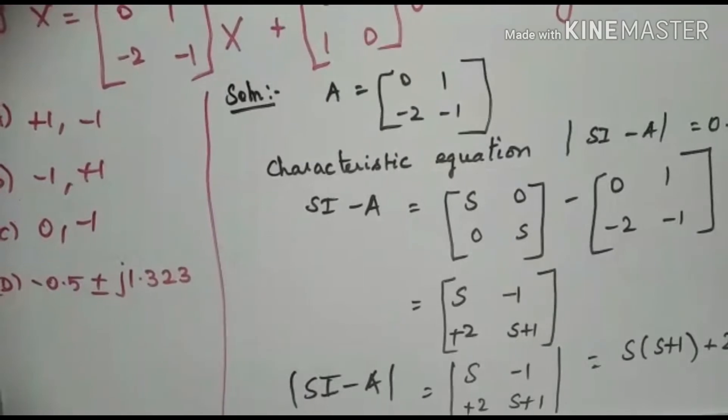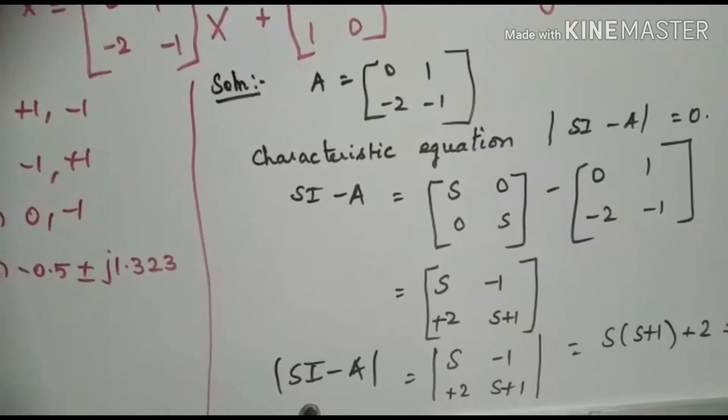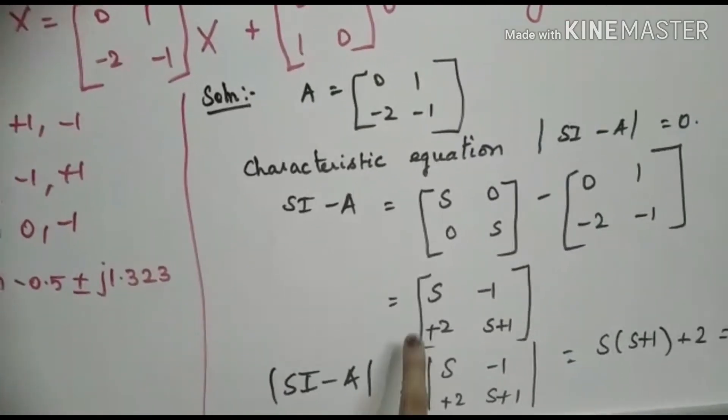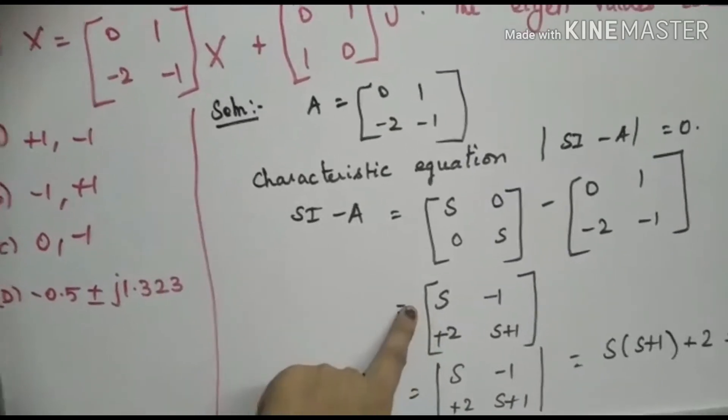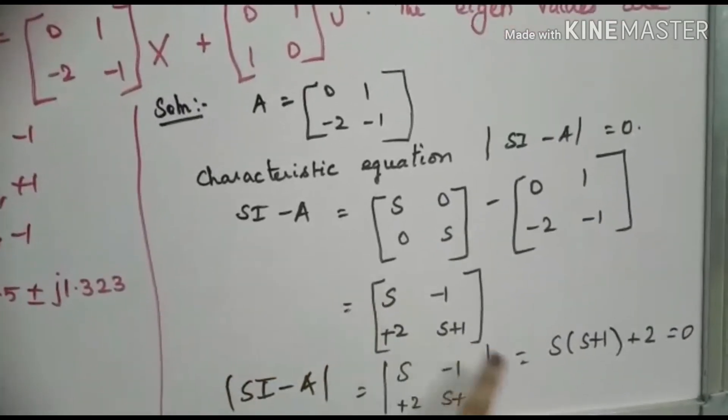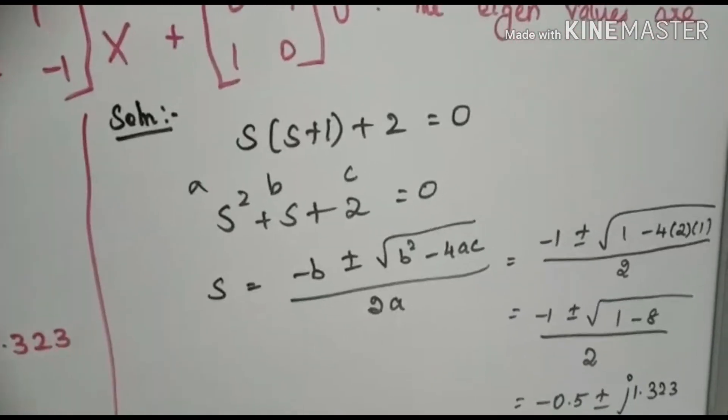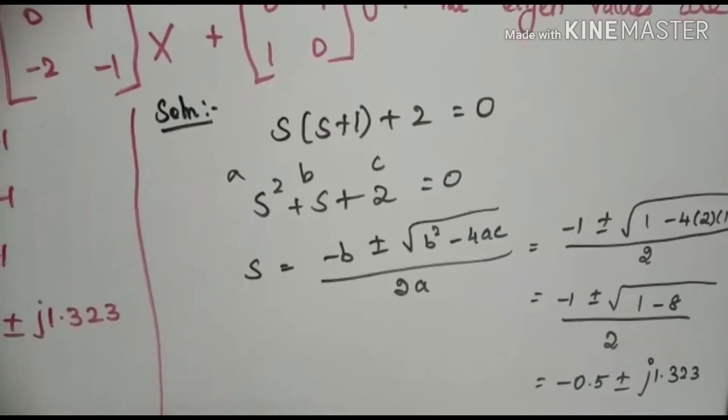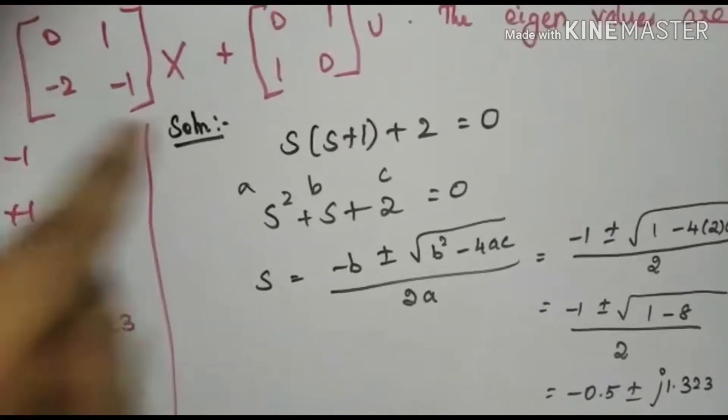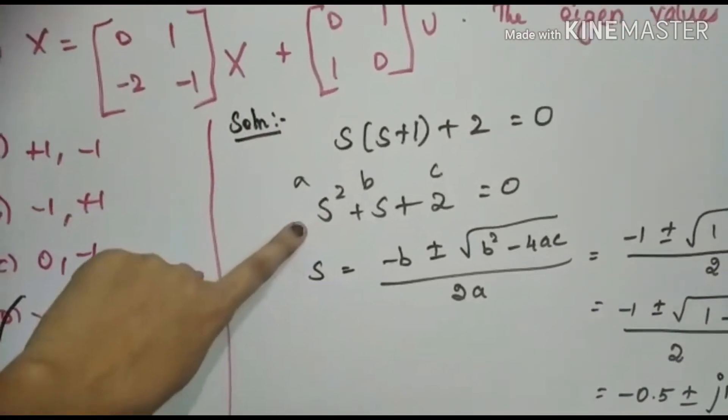Now we need to find the determinant of SI minus A. We need to find the determinant value for this matrix. So we are getting S times (S+1) plus 2 equals 0. Now we need to solve this quadratic expression S squared plus S plus 2.